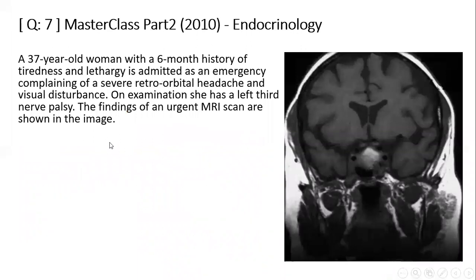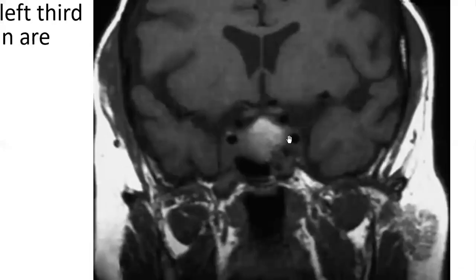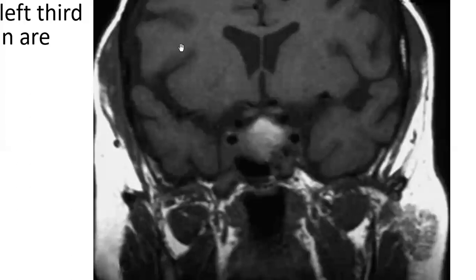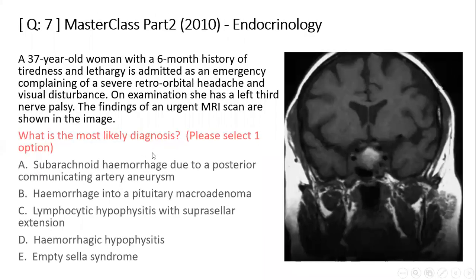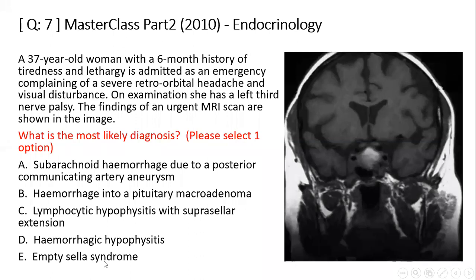Another question: a 37-year-old woman with six months of tiredness and lethargy, admitted as an emergency with severe retroorbital headache, visual disturbance, and a left third nerve palsy. Urgent MRI shows a large pituitary gland with hyperintense signal on this image — likely without contrast. Options include subarachnoid hemorrhage due to posterior communicating artery aneurysm, hemorrhage into a pituitary macroadenoma, lymphocytic hypophysitis with suprasellar extension, hemorrhagic hypophysitis, or empty sella syndrome. The answer is hemorrhage into a pituitary macroadenoma — pituitary apoplexy.